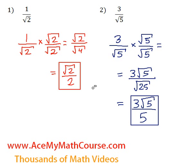That is it. Fully rationalized. The denominator has been fully rationalized. And we have 3 square root of 5 over 5, which is equivalent to 3 over square root of 5. That's it.